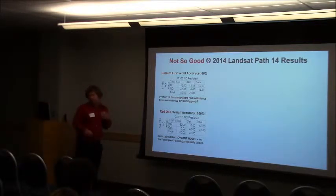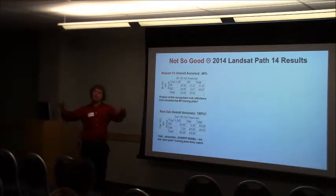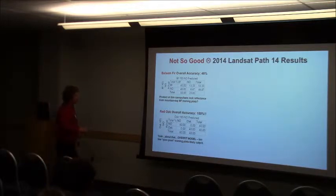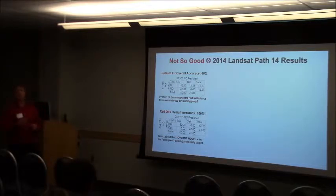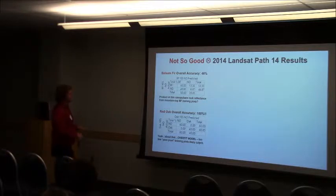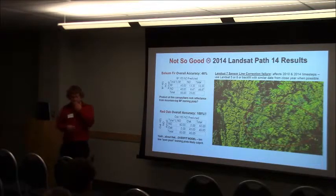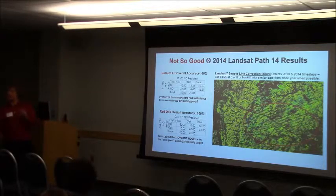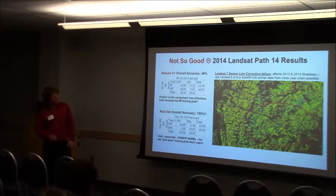Our balsam fir — not so good. Down around 46% overall accuracy, and I think this is largely due to most of our training plots being on top of mountains, so you've got these really thin canopies with rock underneath that I think is really affecting our sensor reflectance. And red oak is a perfect model — no, it's perfectly overfit. I think we had four total pixels in the entire region for training data. Four pure pixels. So this is a model that's overfit. To address this, we just need to find some more pure stands of red oak, which is really hard in the northeast. For more recent time steps, there's also the Landsat 7 sensor line correction failure, where you've got these literal lines with no data. We've tried to get around that by backfilling with phenologically similar dates, but sometimes we just can't because of clouds or other issues.